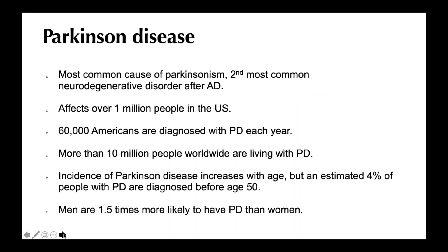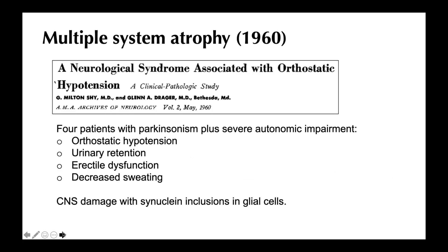Parkinson's disease, the most common synucleinopathy, is the second most common neurodegenerative disorder after Alzheimer's disease — affecting around 1 million people in the US, with 60,000 diagnosed each year, and over 10 million worldwide. Multiple system atrophy is much less common. It was first described in 1960 by Shy and Drager, in patients with Parkinsonism who additionally had severe autonomic impairment — orthostatic hypotension, urinary retention, erectile dysfunction, and decreased sweating. It took a few years to realize that synuclein was responsible, but mostly initially accumulating in oligodendroglial cells.